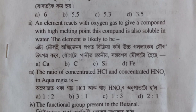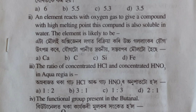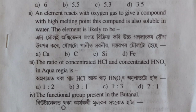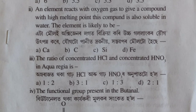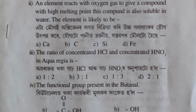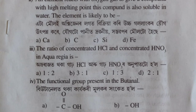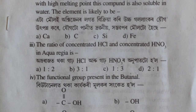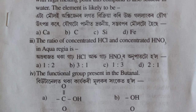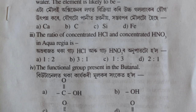Third question: the ratio of concentrated HCl and concentrated HNO3 in aqua regia is — HCl and HNO3 are mixed in a specific ratio. The correct option is option number B, 3 is to 1.